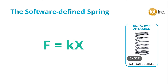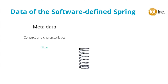To get a more realistic picture of the spring we need more data and more sophisticated models. What is the size of the spring? What's the gauge? What material is it made out of? What's the geometry, and what's its temperature and environment? This data about the data is called metadata.